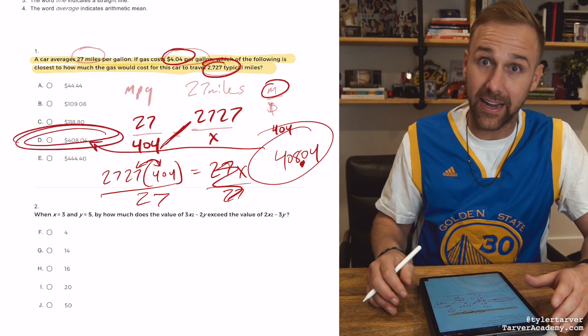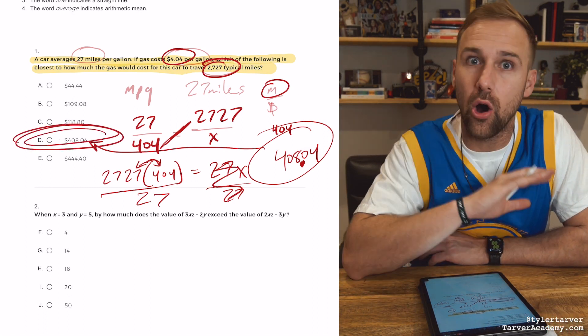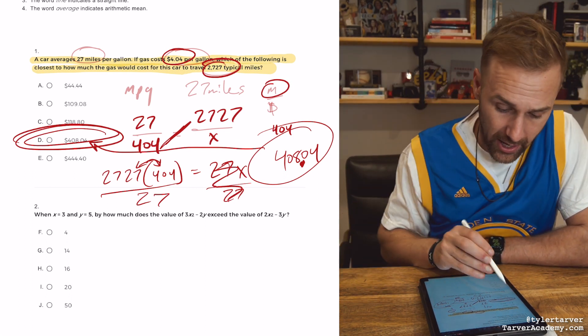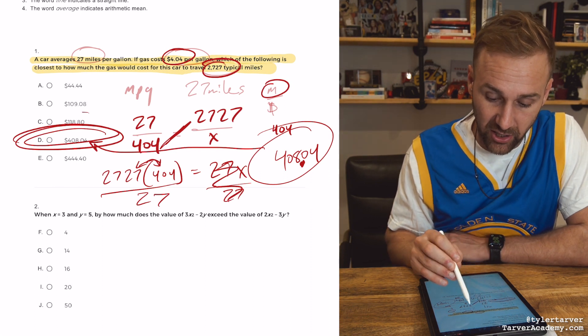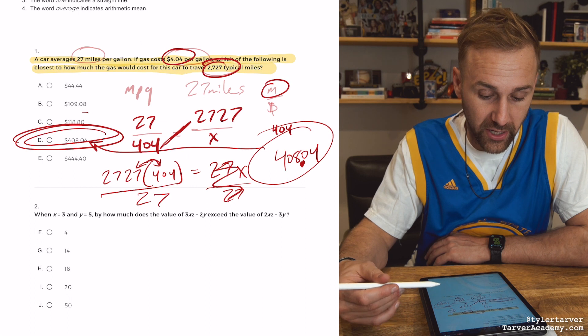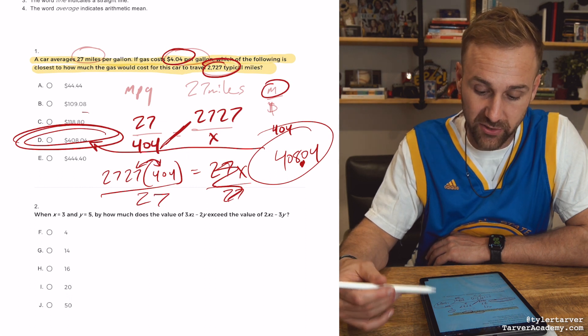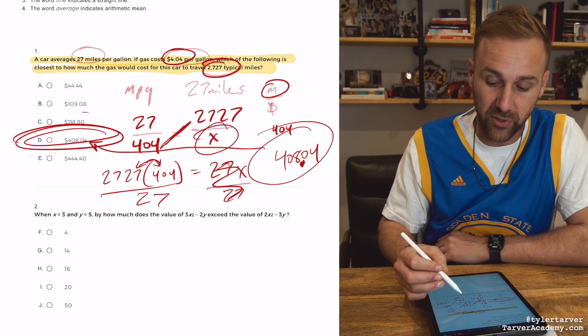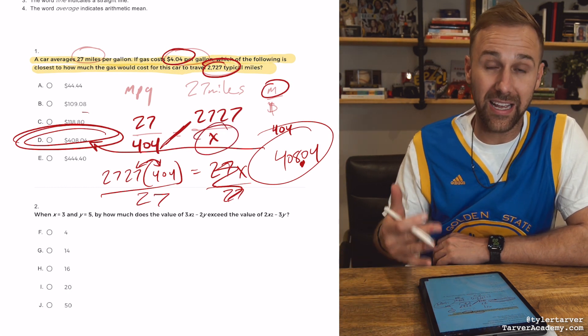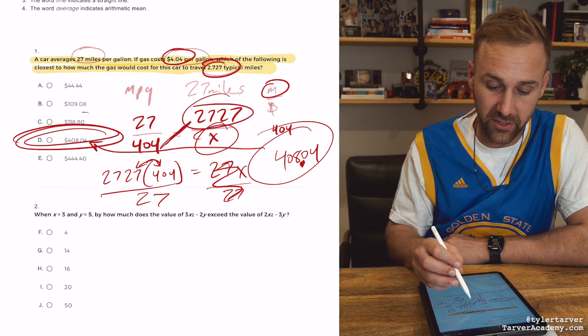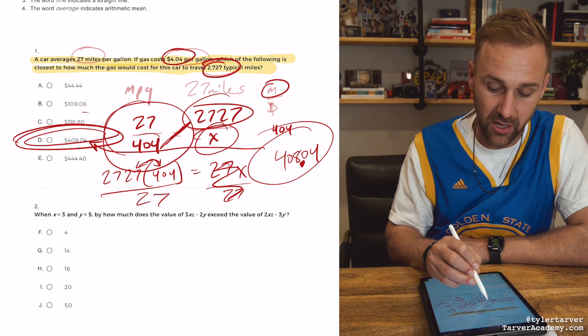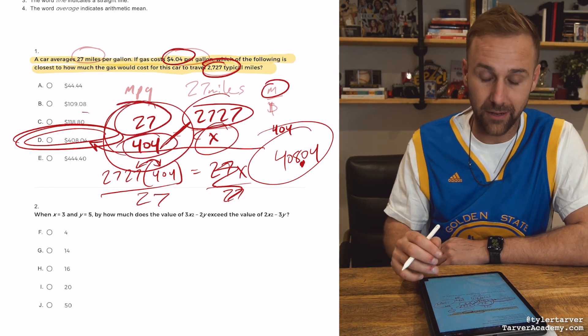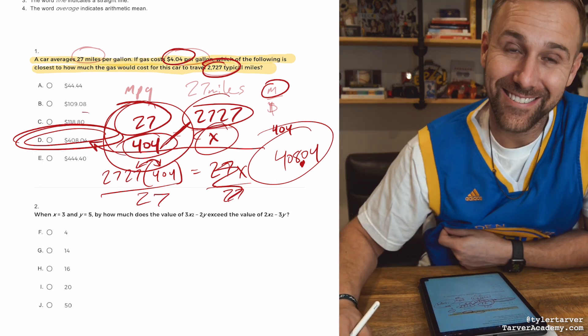Oh man, we got us an answer, ladies and gentlemen. Now, let's check. I always recommend read the problem again to make sure you answered what it's asking for. Car averages 27 miles per gallon. If gas costs $4.04 per gallon, which of the following is closest to how much the gas would cost for this car to travel 2727. Now, we got to keep in mind, this X represents how much it's going to cost to run this many miles. We got to make sure that's the same thing we did here, which is 404 pennies is for 27 miles. So it works out. We did it. We did it guys. Look at us. We learned. Way to go.